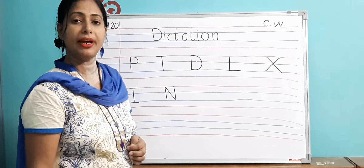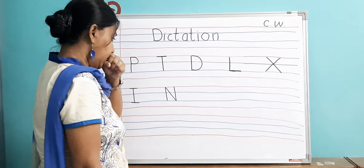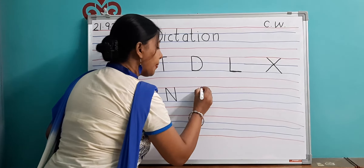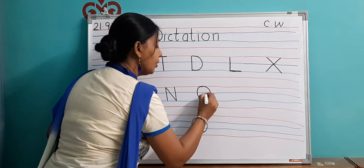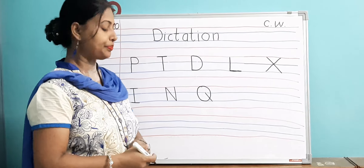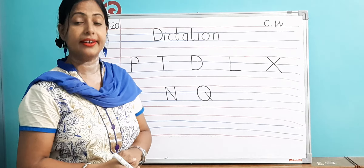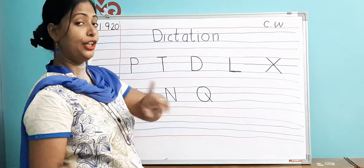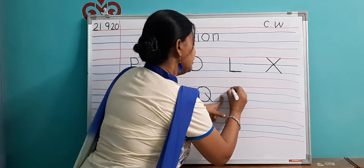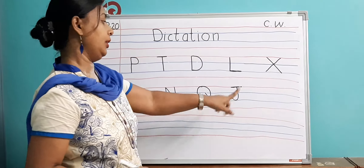After N, the next alphabet is Q — Q for queen. Leave one finger space, then after Q write J — J for jug. Again leave one finger space and write J for jug.